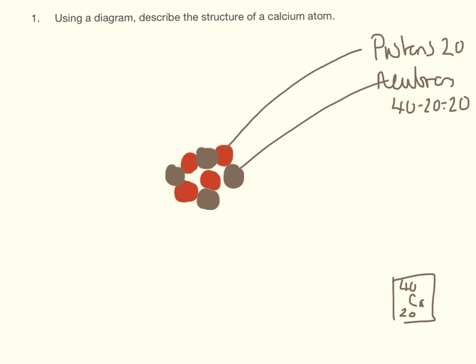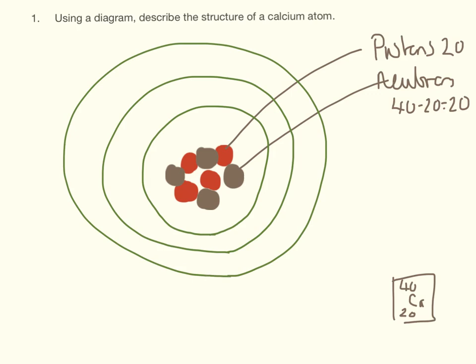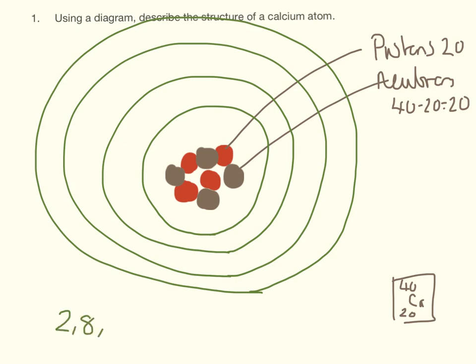Also means it's going to have 20 electrons and it is in period 4, which means it is going to have 1, 2, 3, 4 shells, and it is in group 2, so it means it's going to have 2 electrons on its outer shell. Now you should remember the electron shells fill up 2, 8, 8, 2. So let me just pop these electrons in here for you.